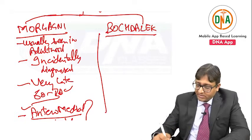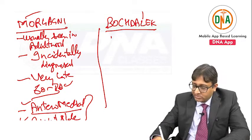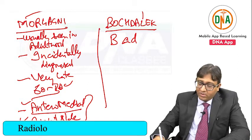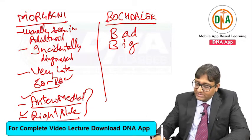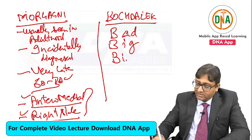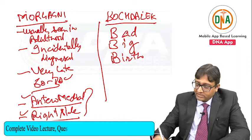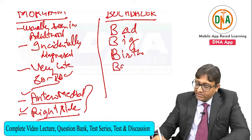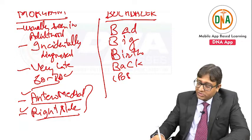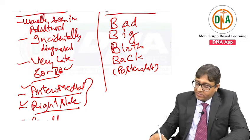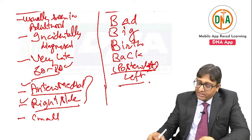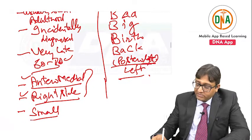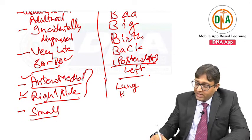What about Bochdalek? So, Bochdalek are bad hernias. Compared to Morgagni's which are small, Bochdalek are big. Morgagni's are seen in late adulthood; Bochdalek are seen since birth — from childhood, from birth. And they are on the back side — back means posterolaterally — and more common on the left side. The defect is posterolateral. They are big, and the patient presents with respiratory problems. They usually lead to lung hypoplasia.